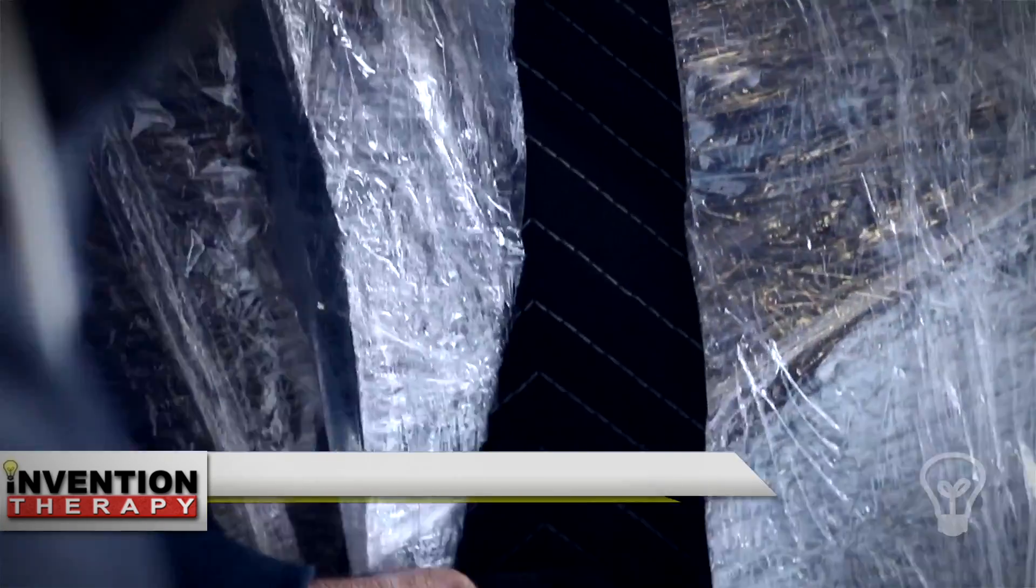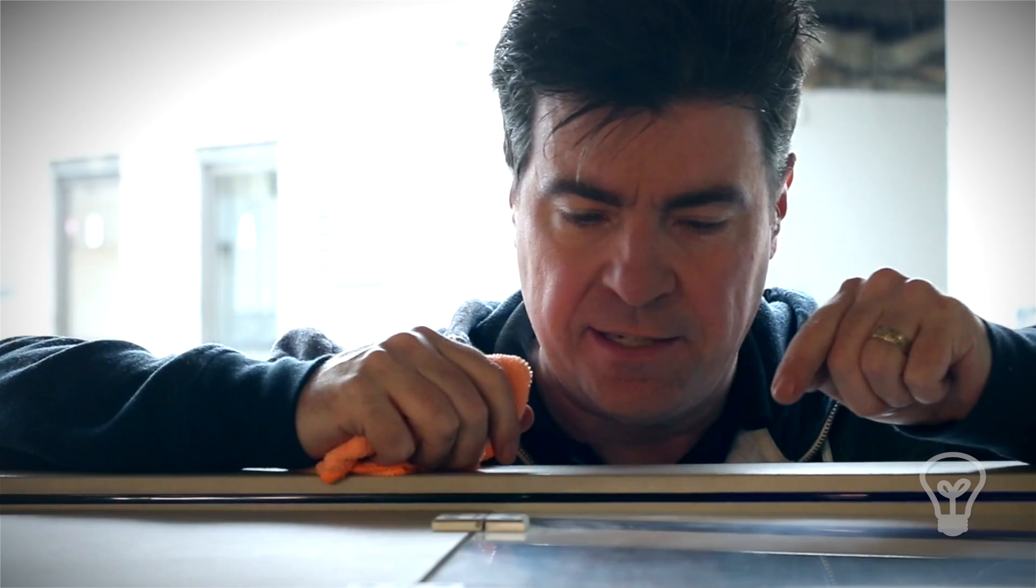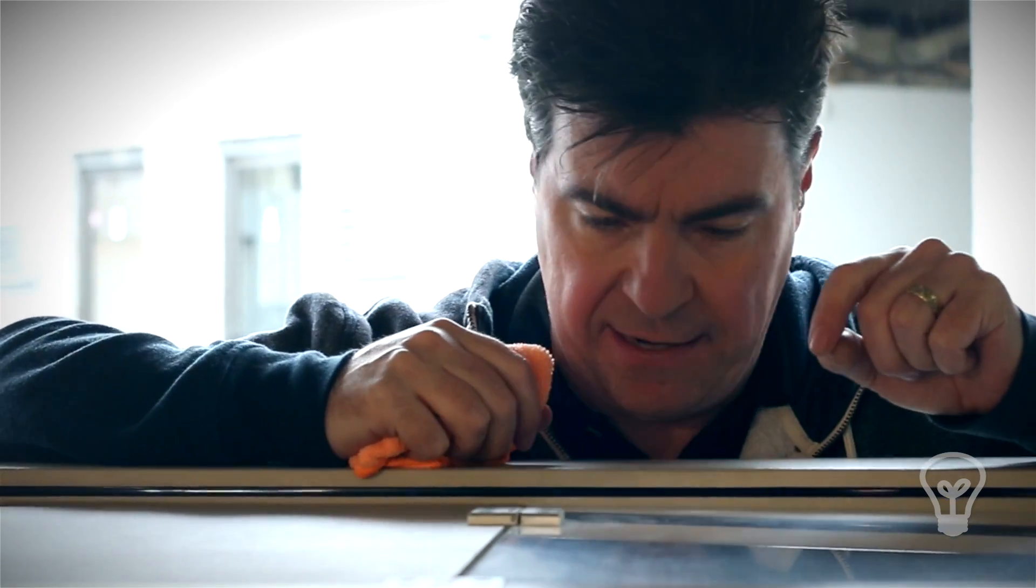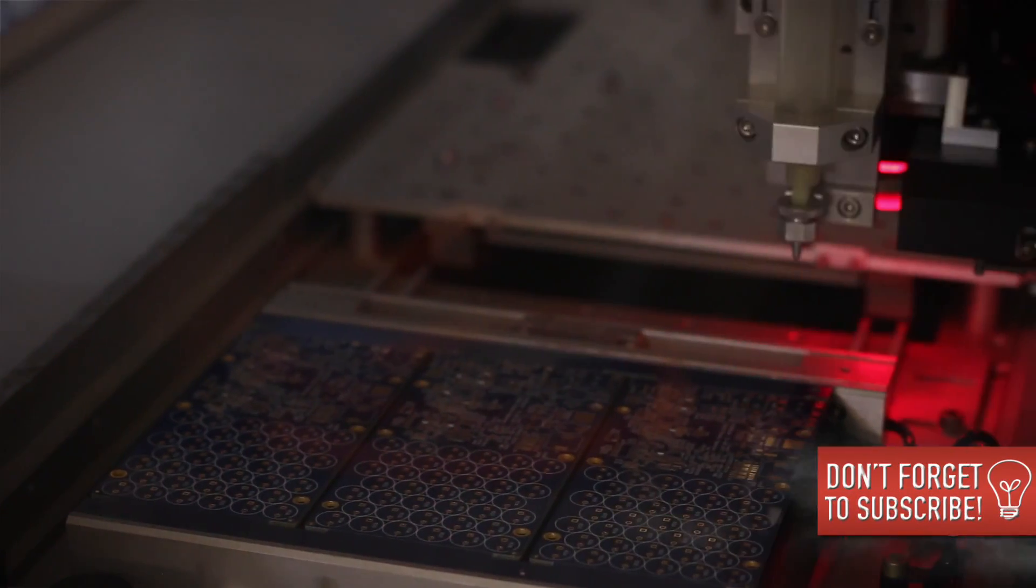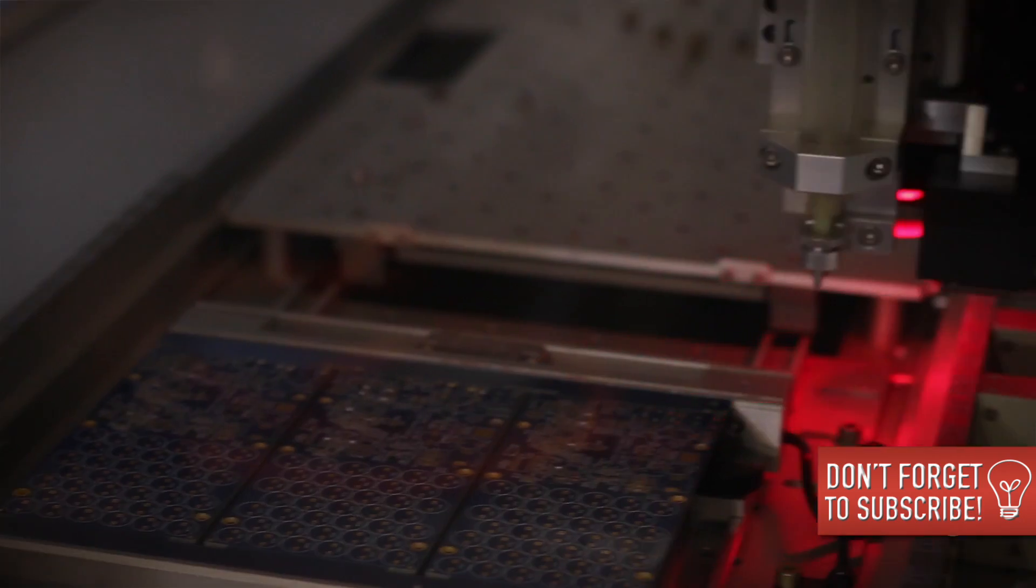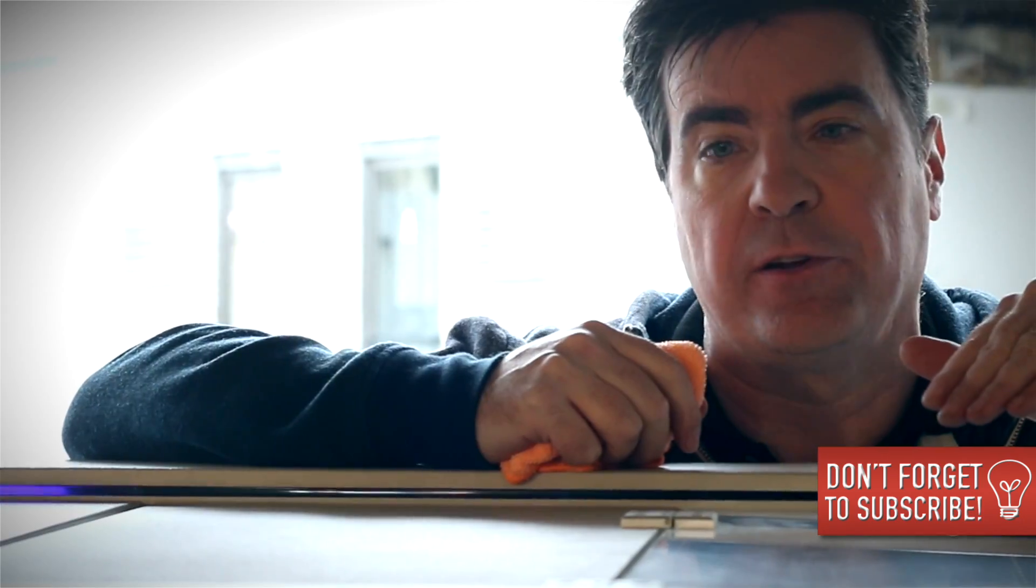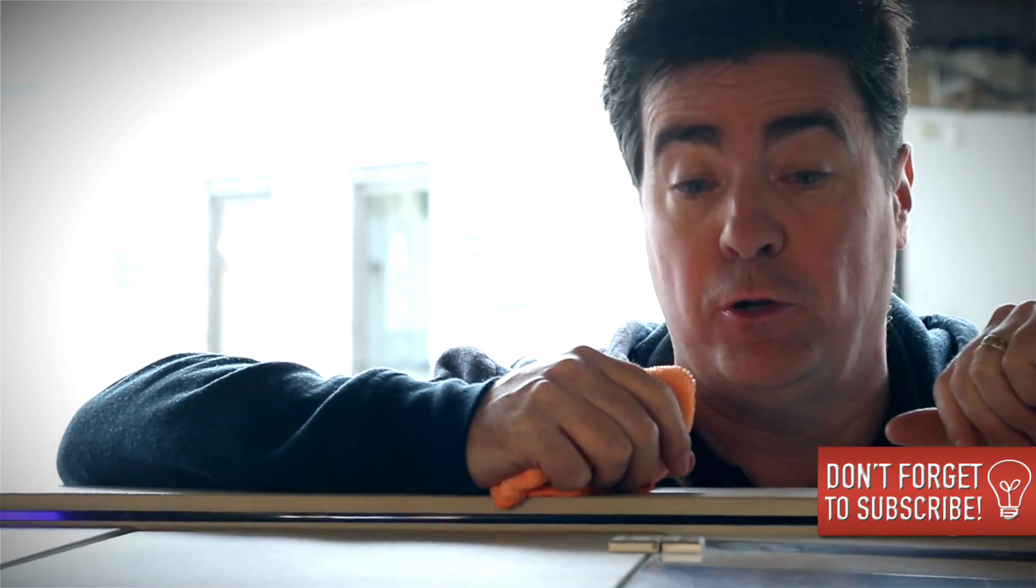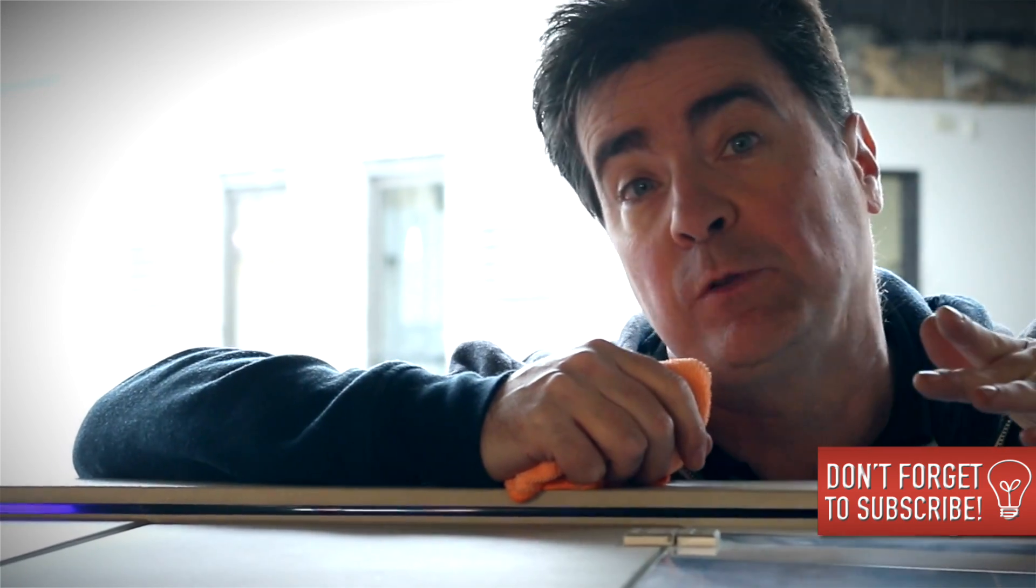The neat thing about this machine is it has 154 feeder locations, which means we can make a board with a lot of components on it. It's also three to four times faster than our other machines, which means we'll be able to fill orders a lot quicker.